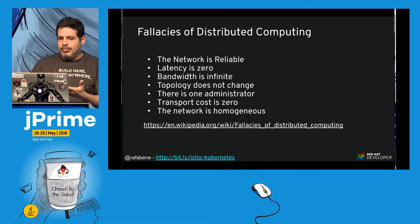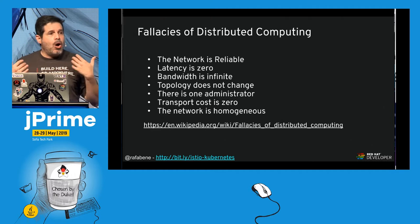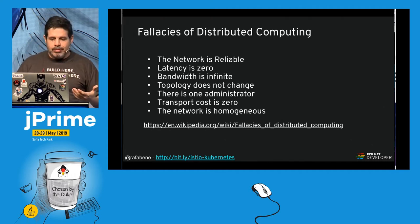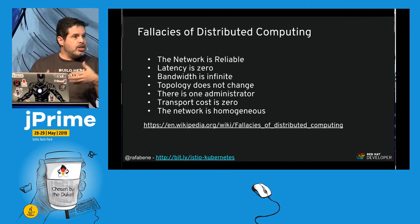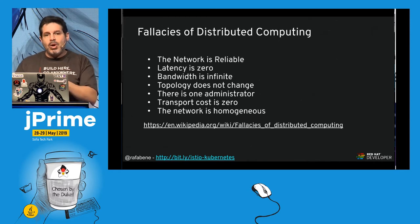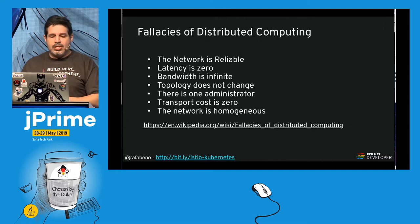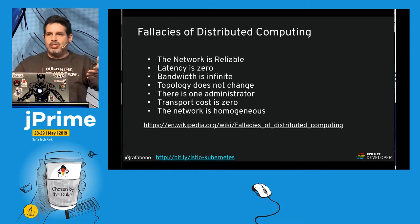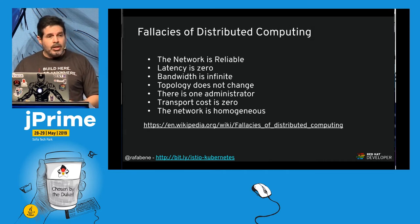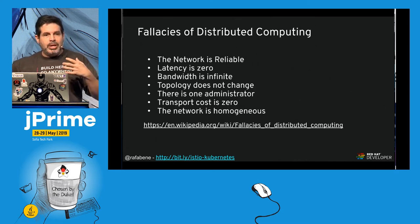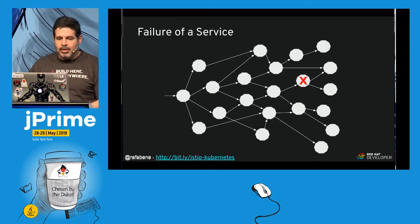For example, we're connected to a network right now, but the network might not always be available. If the Wi-Fi goes down, I won't have access to my slides. Latency is not zero, bandwidth is not infinite, the topology can change, there is more than one administrator, and there is a cost. Most of the time we think we're running locally. These fallacies of distributed computing can make us fail.